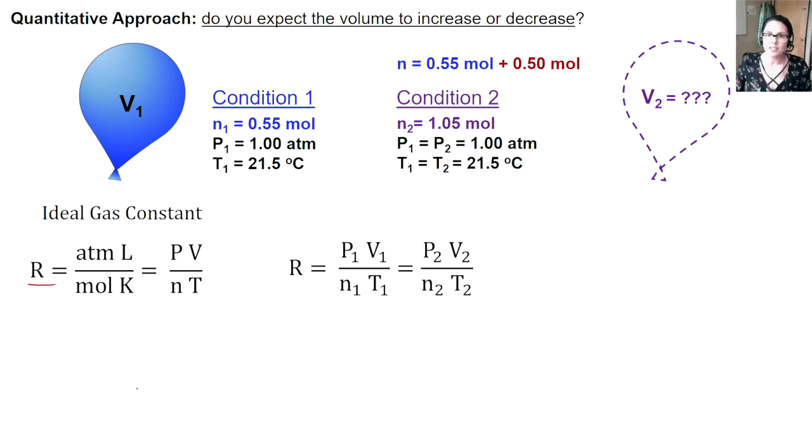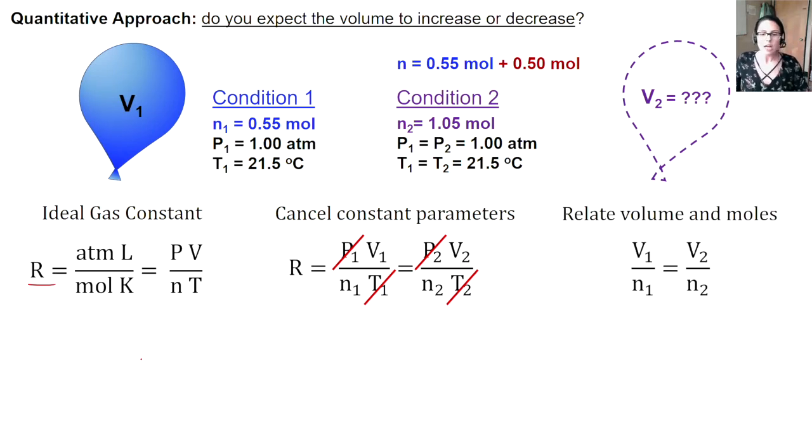Now let's cancel out our constant variables, pressure and temperature. This is going to simplify the equation for us to V1 over N1 equals V2 over N2. We need to rearrange this equation for V2, the volume after an additional amount of helium moles was added. Did you get it? V2 equals V1 times N2 over N1.